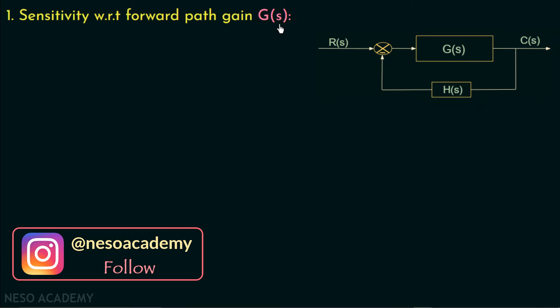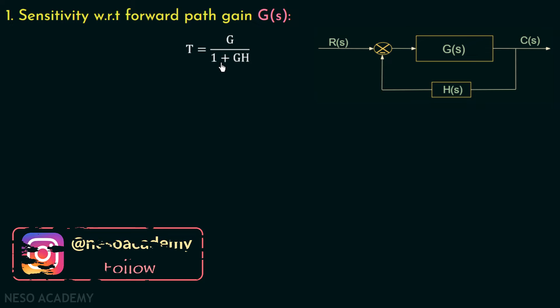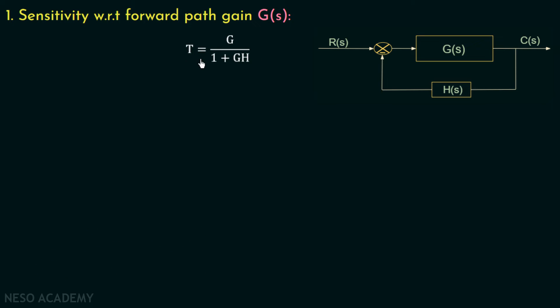In a closed loop system we have two gains: one is the forward path gain G and the other one is the feedback path gain H. If we talk about the overall transfer function of a closed loop system, it is T equal to G over 1 plus GH in case of negative feedback. In control systems, by default we use negative feedback.